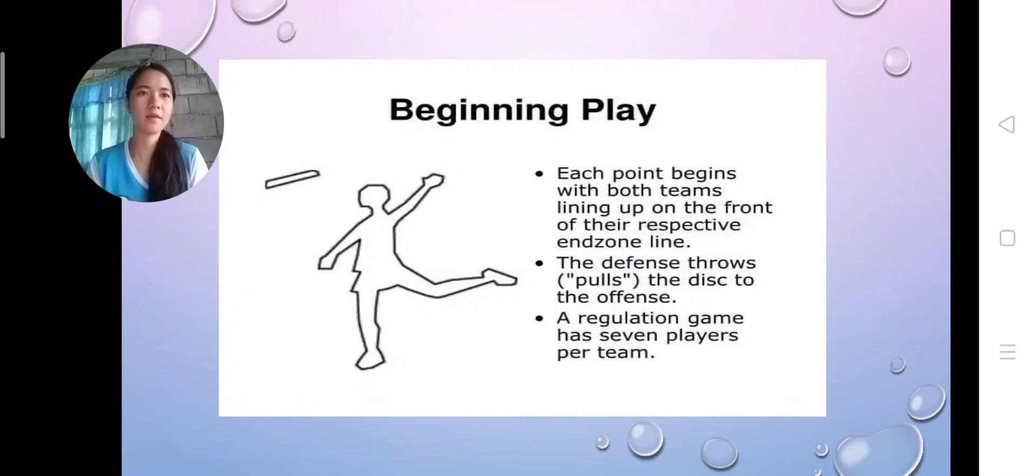About the beginning play. Each point begins with both teams lining up on the front of their respective end zone line. The defense throws the disc to the offense. A regulation game has seven players per team.